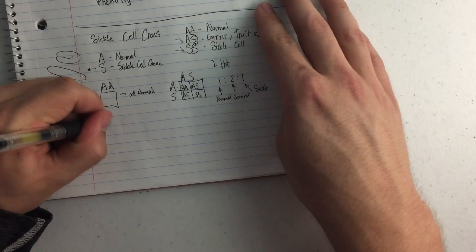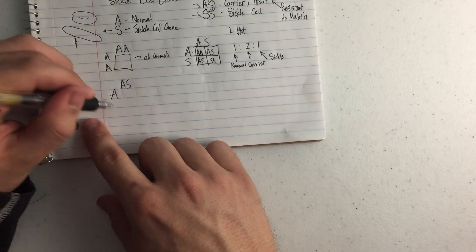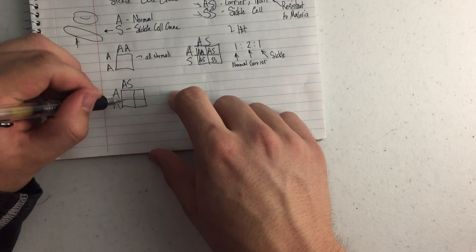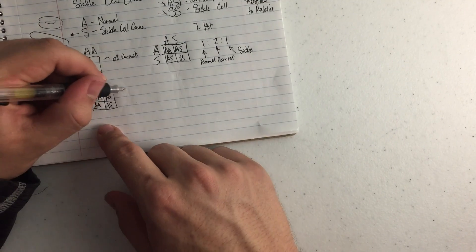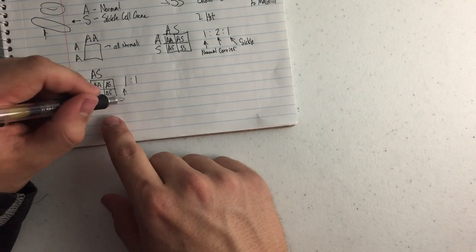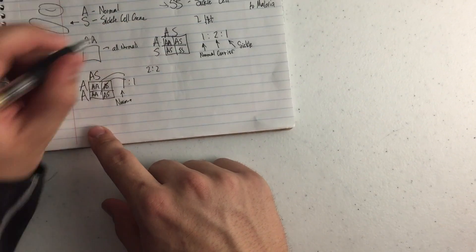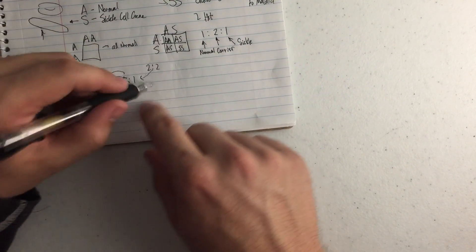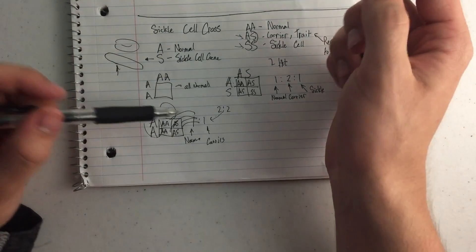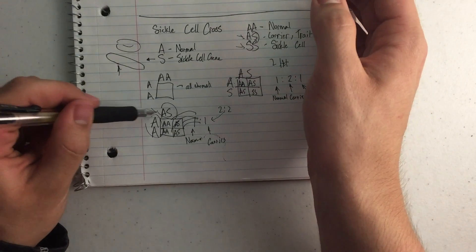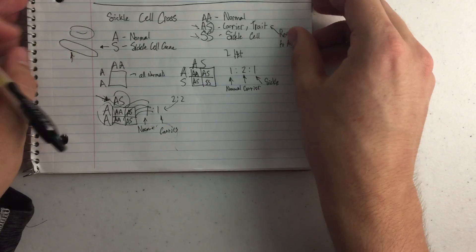Now if we cross a carrier parent (AS) with a normal parent (AA), we'd get AA, AA, AS, and AS — a 2:2 ratio, which reduces to 1:1. Out of four kids we'd expect two to be normal and two to be carriers. So in a cross between a homozygous dominant and a heterozygous individual, we would only see carriers and normal people. If a couple came wondering whether they could have a child with sickle cell, the answer would be no — they cannot produce offspring with the sickle cell trait.